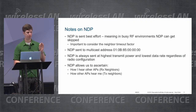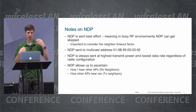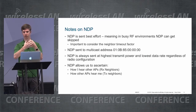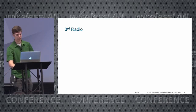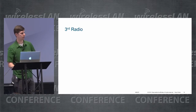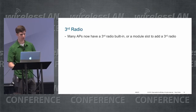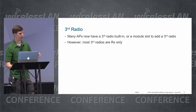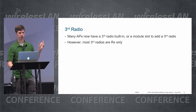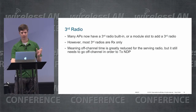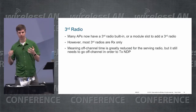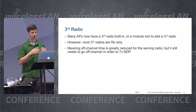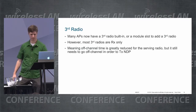NDP allows us to figure out, as an access point, how I hear other APs (receive) and how other APs hear me — so it captures both portions of the RF relationship. My last slide is on third radios. Some access points have third radios, whether built-in or via a modular slot. However, these third radios are generally receive-only. That saves the client-serving radio from having to go off-channel as often, but it still needs to go off-channel to transmit NDP, for example.